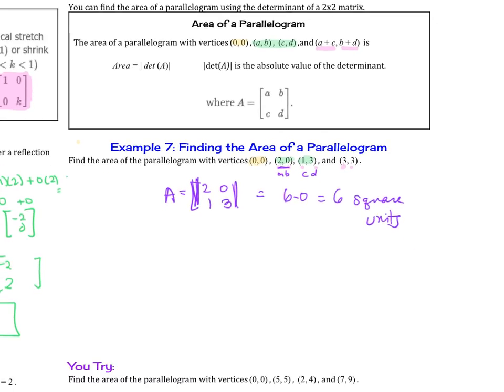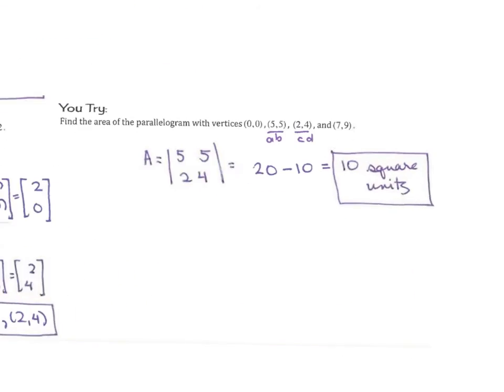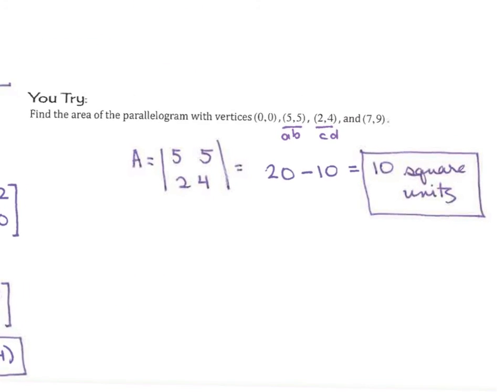So you don't want to mix these up. Find the area of the parallelogram with vertices (0, 0), (5, 5), (2, 4), and (7, 9). Trying it out, you should have gotten 10 square units with your matrix being [5, 5; 2, 4].